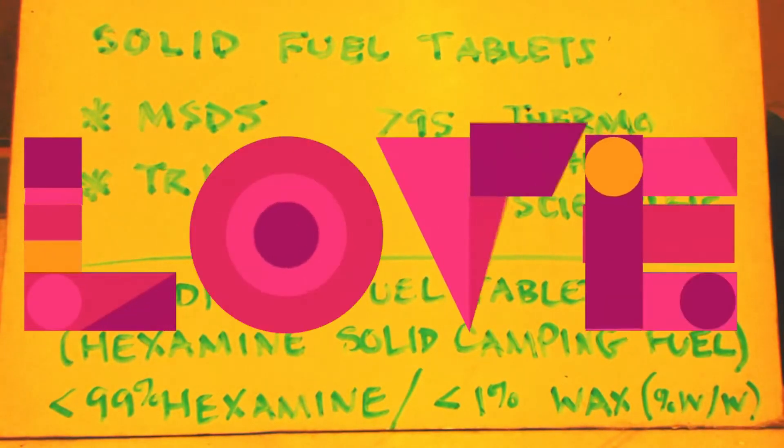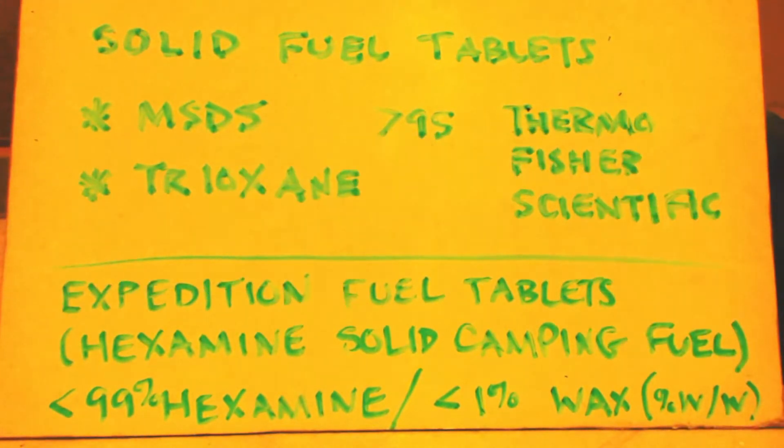When you buy trioxane, same thing with hexamine - when you buy it, look up the MSDS and make sure that there's no trioxane in there. A lot of companies will put both in.